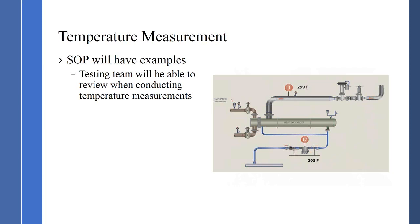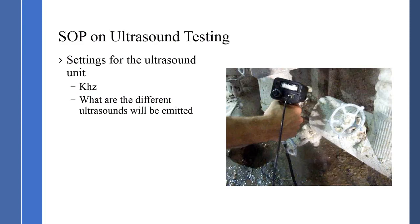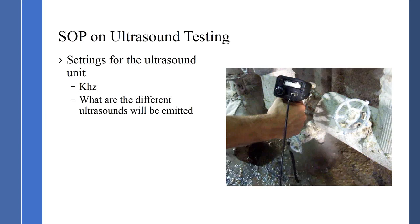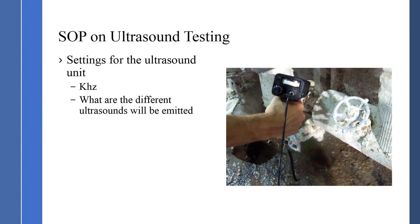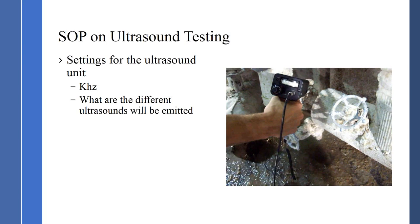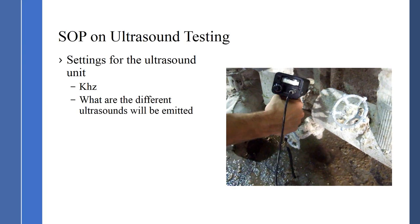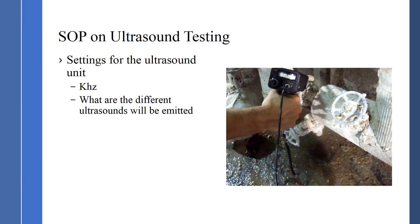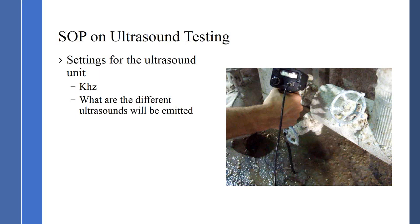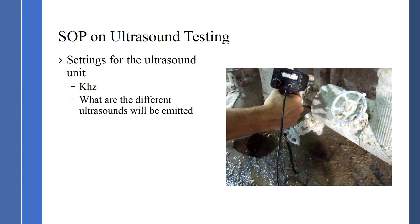The SOP also goes through the settings of the ultrasonic unit — what kilohertz setting to use, how to adjust the sensitivity of the ultrasonic units, the operation of the different types of steam traps, and the ultrasonic sounds emitted by each. This is very detailed because there are three major groups of steam traps: mechanical, thermodynamic, and thermostatic. We must ensure people understand the testing procedures for each of those three groups.